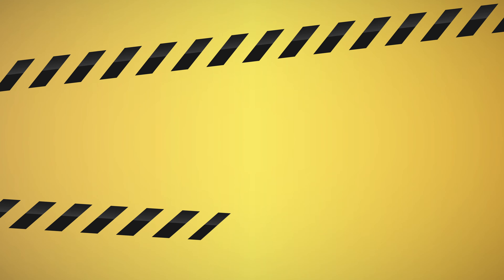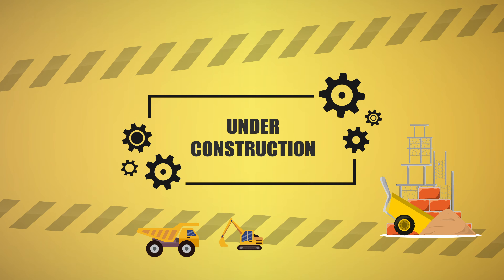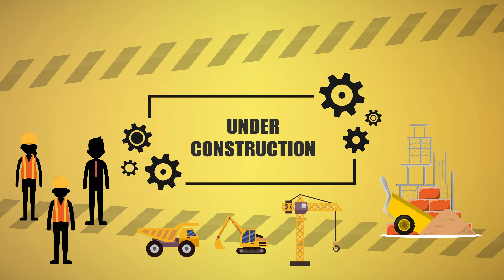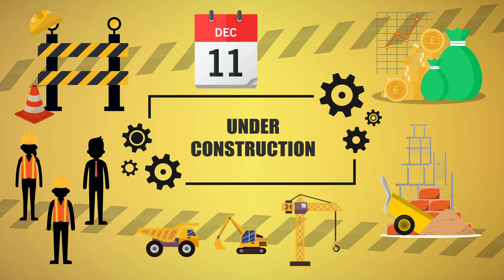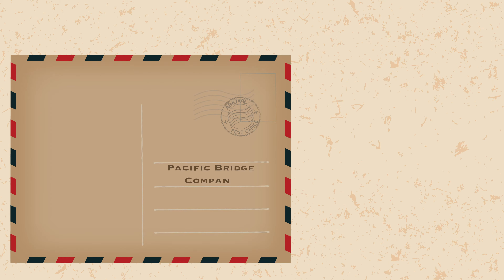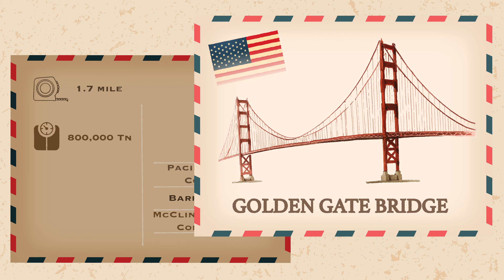Next is the contractor. They turn the plans of a designer into reality. They are responsible for attaining materials, equipment, and labour — all required to carry out projects in accordance with budget, time schedules, and safety regulations. Pacific Bridge Company, Barrington HILP, and McLintock Marshall Corporation are just some of the contractors who united to build the Golden Gate Bridge in San Francisco: a massive 1.7-mile-long suspension bridge weighing over 800,000 tonnes, able to withstand 90mph winds and magnitude 8 earthquakes.